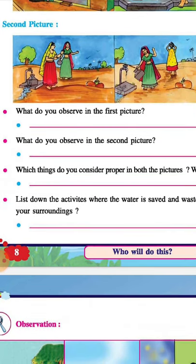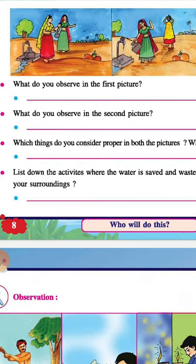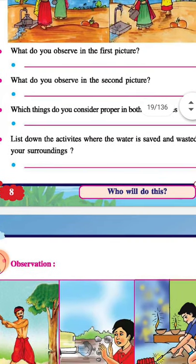Now list down the activities where water is saved and where it is wasted in your surroundings. We are getting running water in the houses from a tap, but what do we do? We waste the water. We waste it while washing clothes — we keep things soaking in the water.